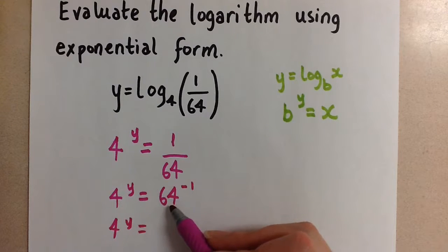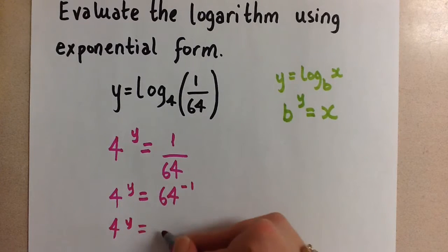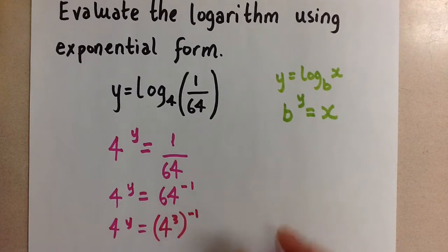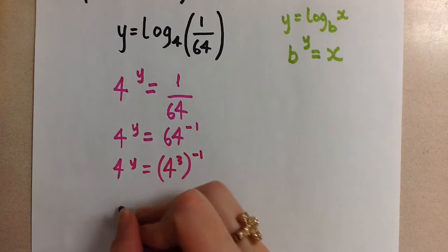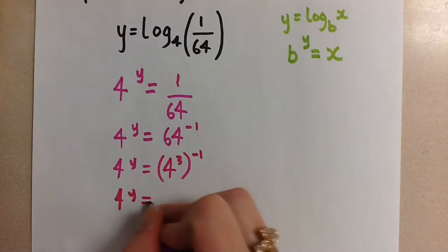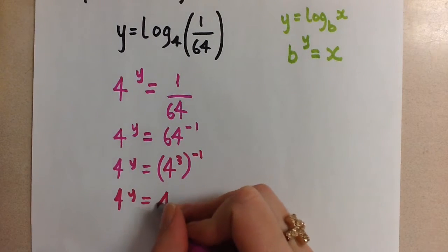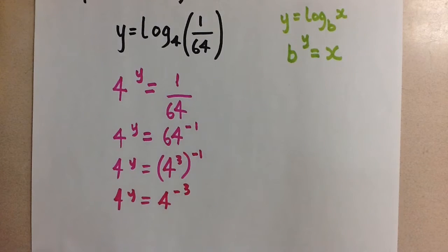And then we need to think about what base and what exponent will give us 64. So 64 is the same as 4 to the power of 3. So I'm going to replace it with 4 to the power of 3, and we still have that negative 1. And now making use of the power of a power rule, 3 times negative 1 gives us 4 to the power of negative 3.